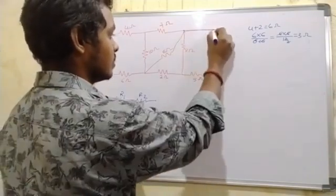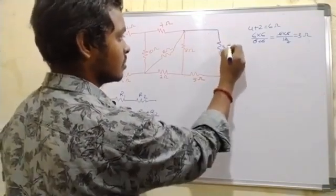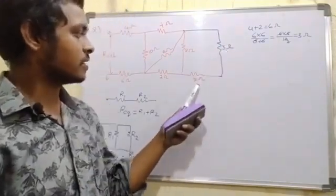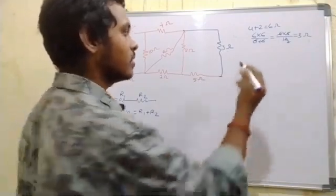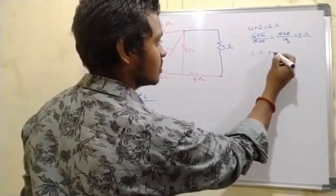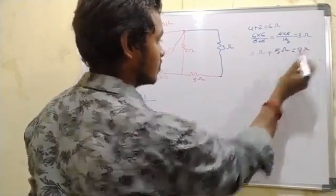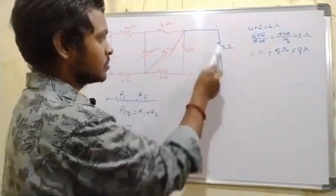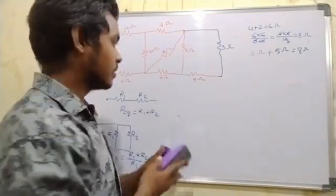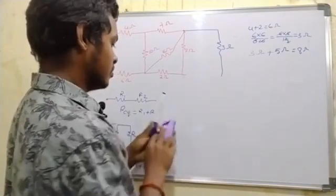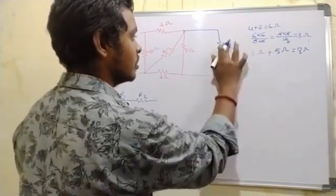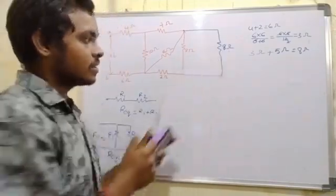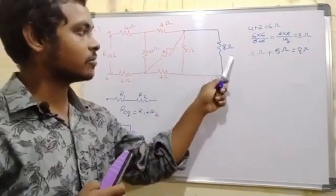Finally we have 3 ohms, and for the series we add 3 ohms and 5 ohms. This terminal gives a total resistance of 8 ohms. Now let me show that we have 8 ohms in parallel.